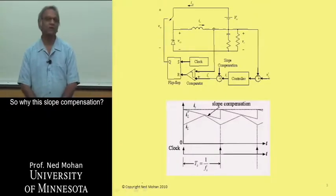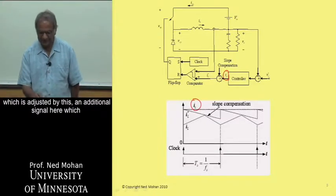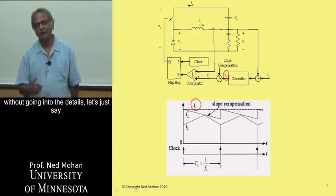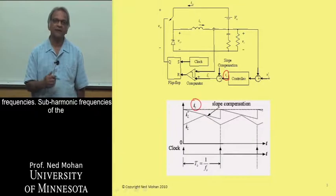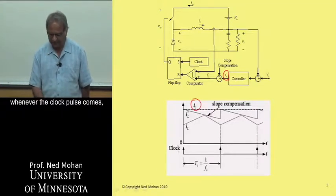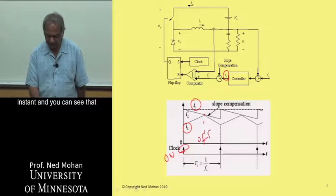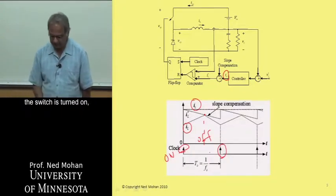The reason for slope compensation is to avoid oscillations at subharmonic frequencies of the switching frequency. Whenever the clock pulse comes, the switch is turned on and the inductor current begins to ramp up. When it hits the reference level in the comparator, the switch is turned off and the inductor current begins to fall. The next clock pulse comes, and the cycle repeats.